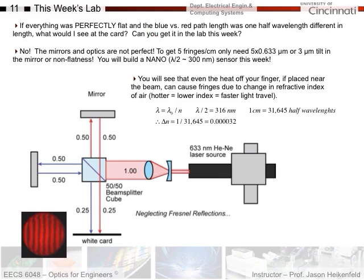Could you get a perfectly dark card in the lab? The answer is no — the mirrors and optics are not perfect. If I wanted only 5 fringes per centimeter, with our 633 nanometer laser, 5 fringes would require a 3 micron tilt or non-flatness in the mirror. It's pretty amazing that this week you're going to build a nanosensor where one fringe move is only 300 nanometers. You can do it by following good optical alignment tips, reversing everything back, and carefully adjusting the mirrors to get your interference fringes.